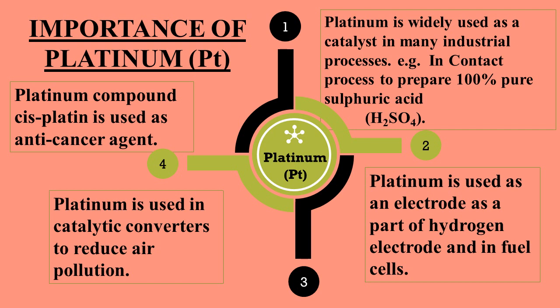Importance of platinum (formula: Pt): platinum is widely used as a catalyst in many industrial processes. Catalysts speed up chemical reactions — for example, in the contact process platinum is used to prepare 100% pure sulfuric acid H₂SO₄. Platinum is used as an electrode in hydrogen electrodes and in fuel cells. It is also used in catalytic converters of cars to reduce air pollution by facilitating complete combustion of carbon monoxide to carbon dioxide. The platinum compound cisplatin is used as an anti-cancer agent.